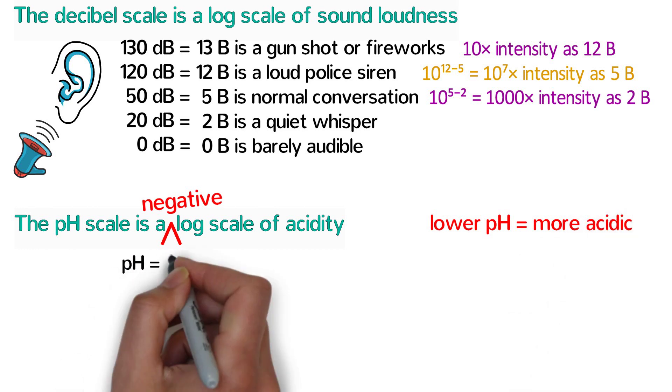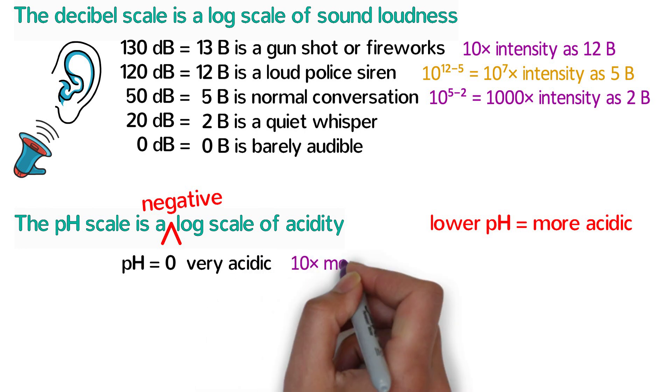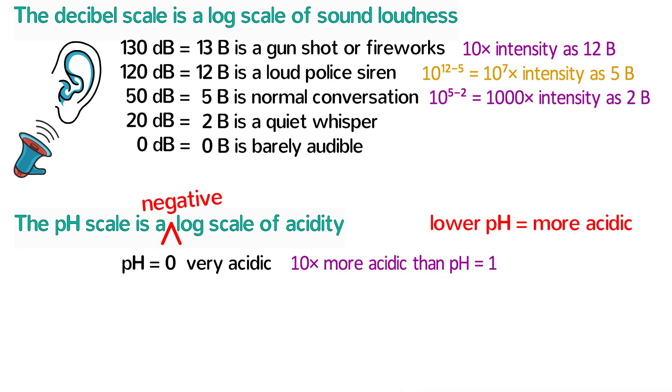So a solution with a pH of zero would be considered very acidic and quite corrosive. In fact, it is ten times more acidic than a pH of one.